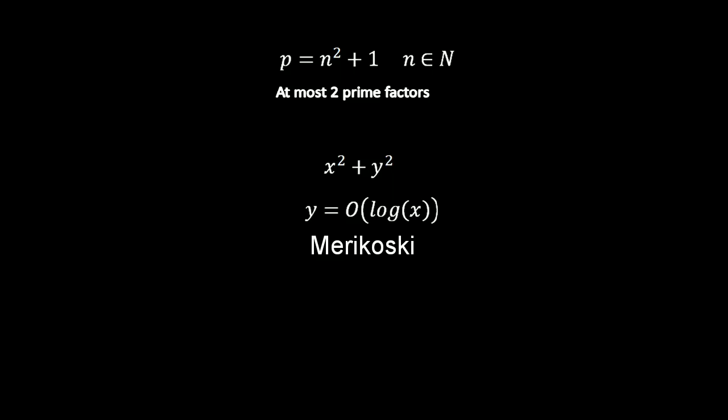Henrik Iwaniec improved the previous works and showed that there are infinitely many numbers of the form n squared plus 1 with the greatest prime factor at least n to the power of 1.279. If it would have been n squared, we would have achieved the conjecture.